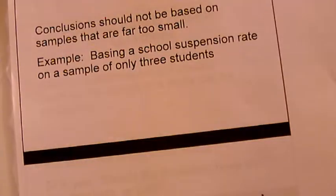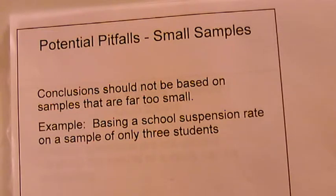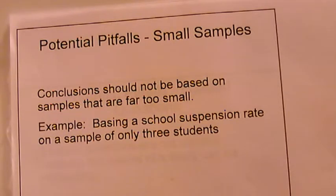Small samples are another potential pitfall. Conclusions should not be based on samples that are far too small. For example, basing a school's suspension rate on a sample of only three students would not work — you can't make a conclusion on only three students. Saying the suspension rate is 67% based on a sample of only three students is problematic. You need a reasonably sizable sample in order to make a valid conclusion.